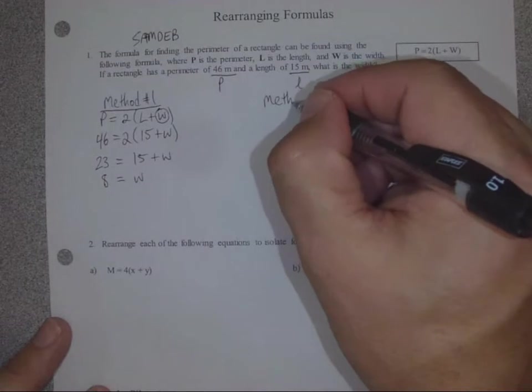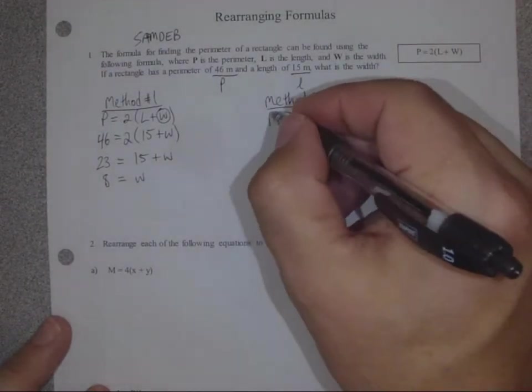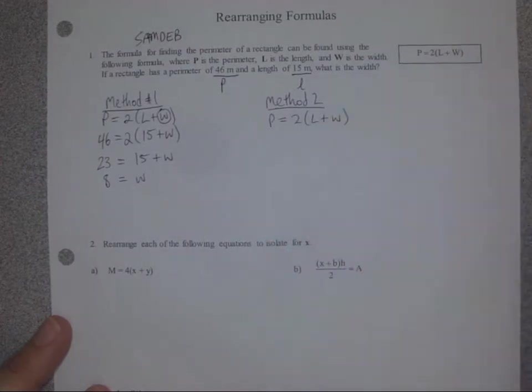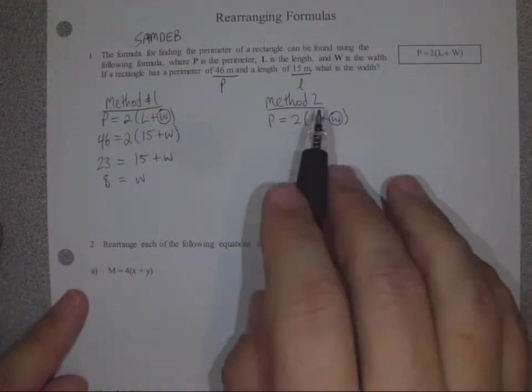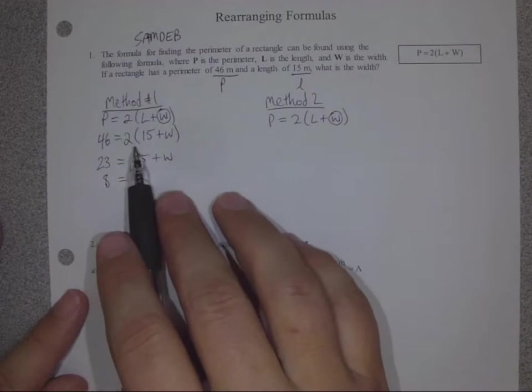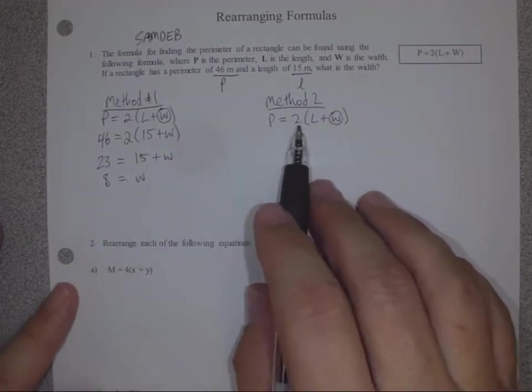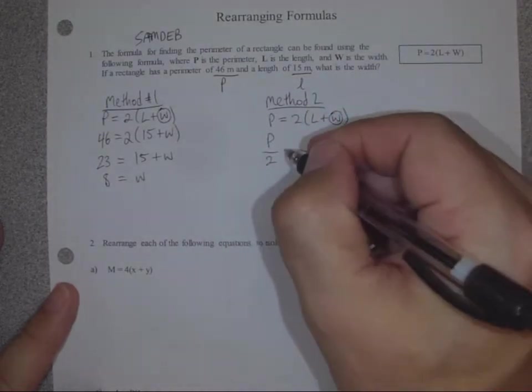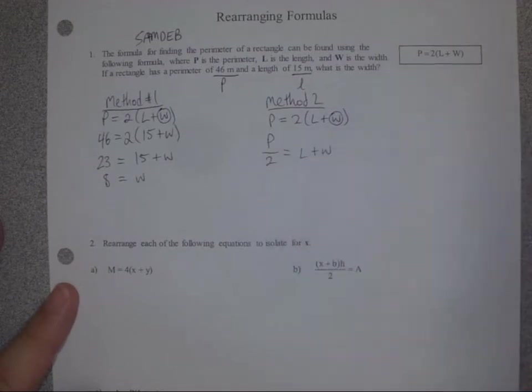Method 2 goes something like this. We take the formula again. But this time, we're not going to substitute anything yet. We're going to rearrange first. So we need to get W by itself, but we're going to follow the same steps as we did back here. So we want to get rid of this times 2 first by dividing both sides by 2.